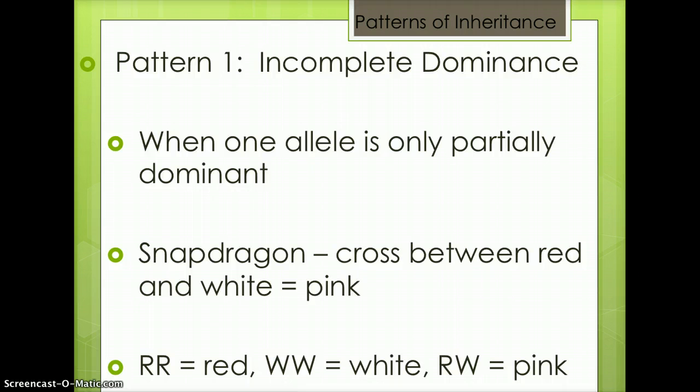Pattern 1 is incomplete dominance. This is when one allele is only partially dominant. For example, in snapdragons, which is a flower, a cross between a red snapdragon and a white snapdragon would result in pink snapdragons.